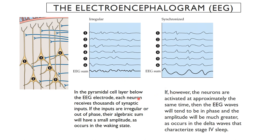When neurons are activated in approximately the same time frame — working in a synchronized way — the small deflections add up to big deflections, and the negative spaces lead to bigger decreases in the overall EEG pattern. This synchronized activity is typically what we see when humans and animals are asleep, similar to what are called delta waves that characterize stage four sleep.